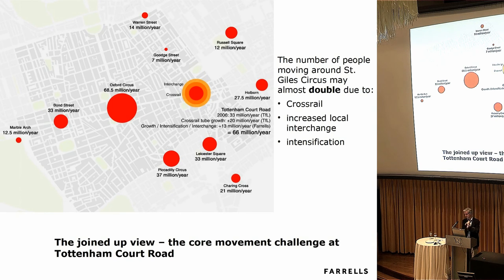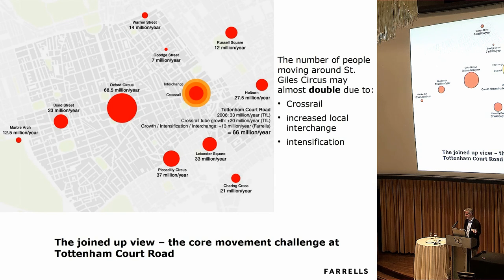If you look at what Crossrail was going to do, if you look at what the Tube Road was going to do, and if you look at what the local planning policy was going to do in terms of intensification, you got to the point where you suddenly realised that Tottenham Court Road at that corner was going to be as busy as Heath Road and as busy as Oxford Circus is now, in a very much smaller space. So one of the first lessons is: we should join up.